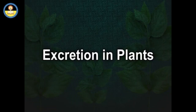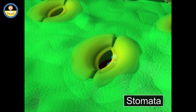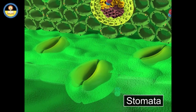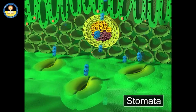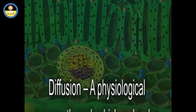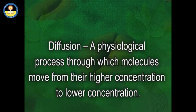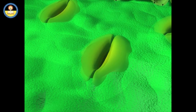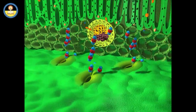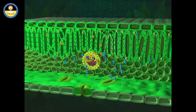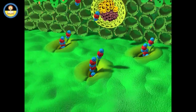Plants get rid of waste products in the following ways. Gaseous waste products like carbon dioxide from respiration, oxygen from photosynthesis, and water vapors are excreted from tiny pores called stomata. This kind of elimination usually takes place through diffusion, a physiological process through which molecules move from higher concentration to lower concentration. During photosynthesis, gaseous carbon dioxide enters the plant cell by diffusion, and once photosynthetic products are formed, glucose is stored in the leaf and oxygen is released out through diffusion.